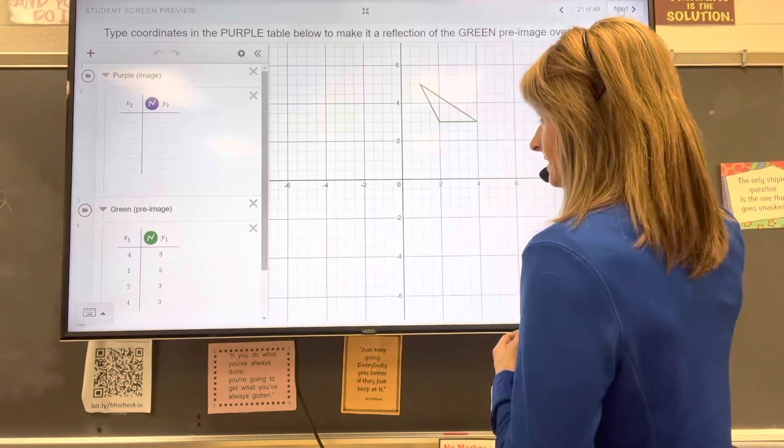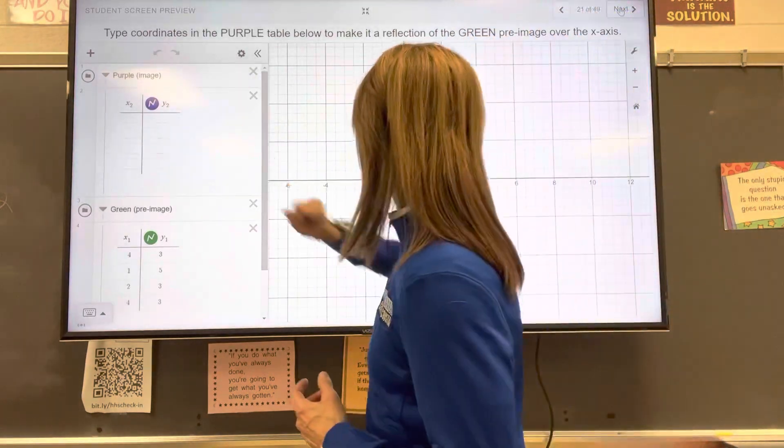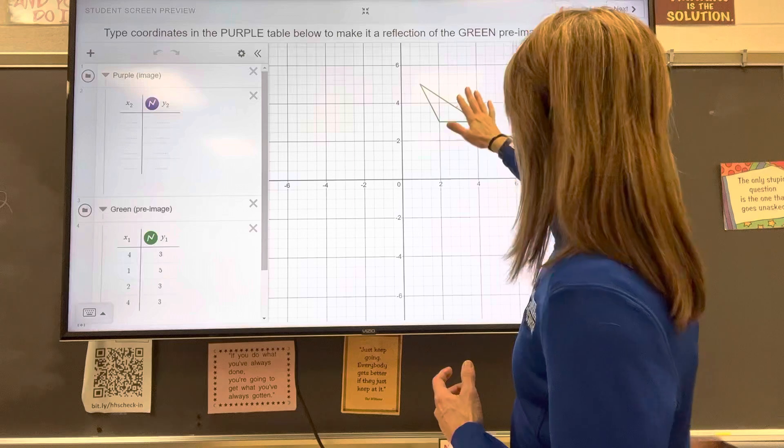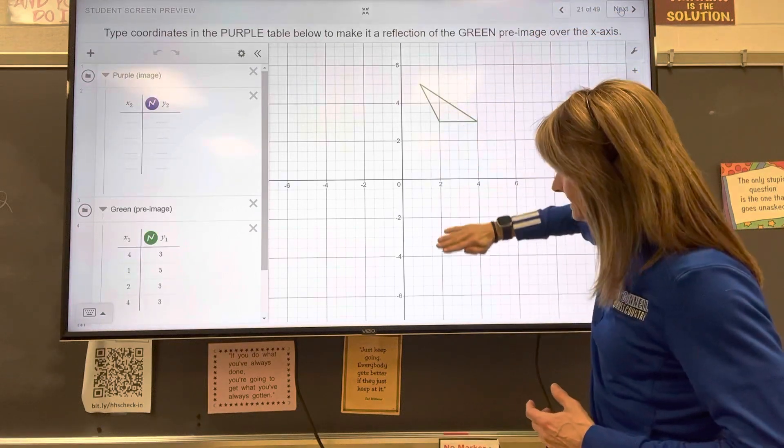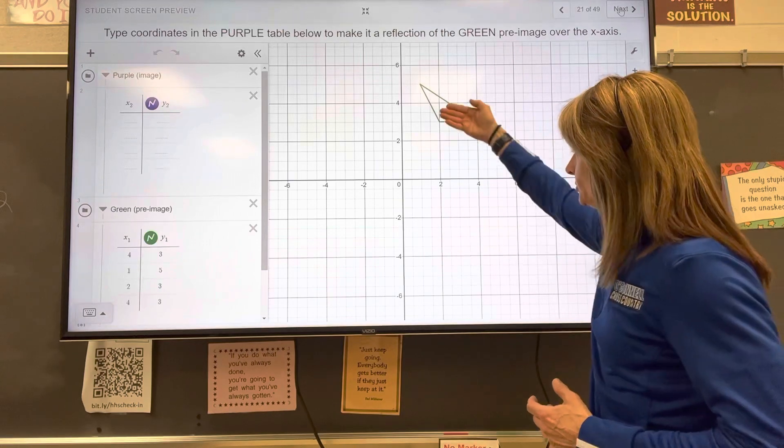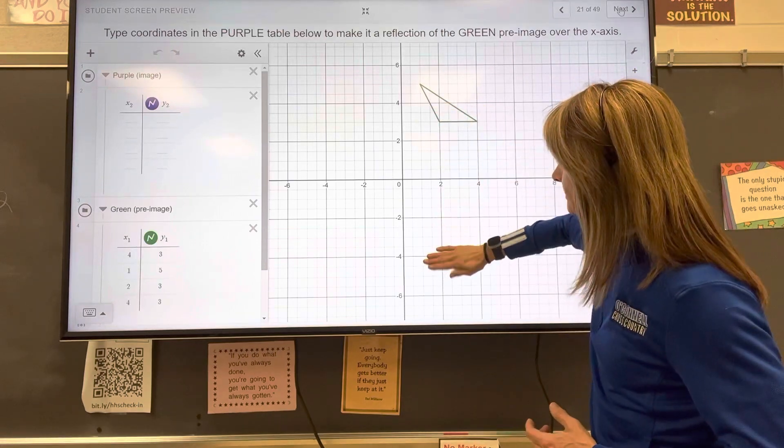So type the coordinates in the purple table below to make it a reflection of the green pre-image. So this is a pre-image and we're reflecting it over the x-axis now to create a purple image that's a reflection.